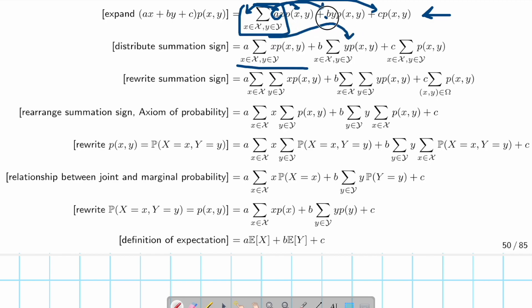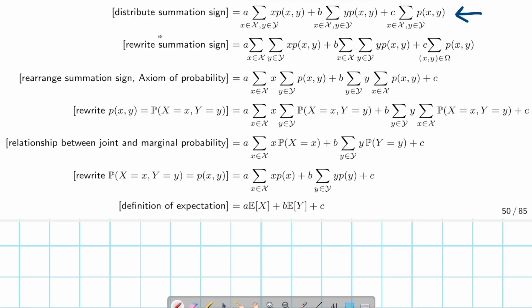And lastly, we do the same for the last term, and also we move the c outside the summation sign. So we are here. When we write the summation sign, this is a summation sign with two indices. We can split them into two summation signs.